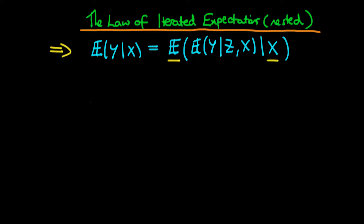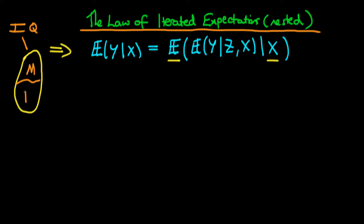So what does it actually mean? The idea here is that we might be interested in evaluating the average level of something within a population. So what we might be interested in is the level of IQ within a population, and what we might do is we might break that population up into males and females. A particular conditional expectation we might be interested in might be: what's the average level of IQ given that an individual is female? In other words, what's the average level of IQ in the female subpopulation?